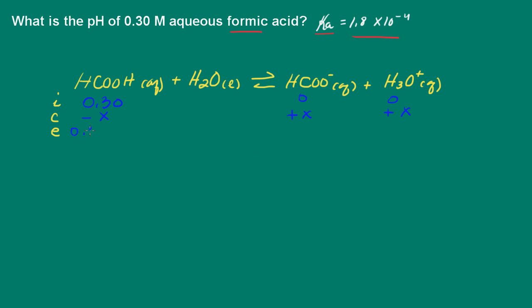the concentration of formic acid will be 0.3 minus X. And here for formate ion and hydronium ion, we just have concentration X.